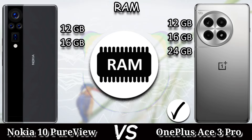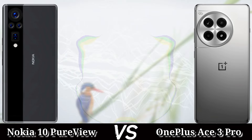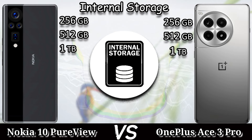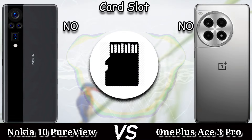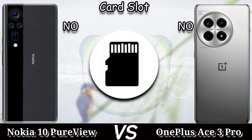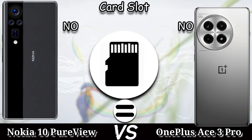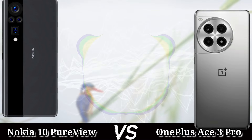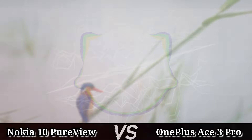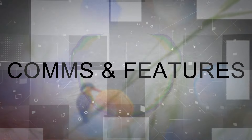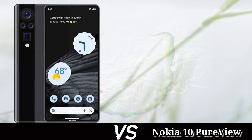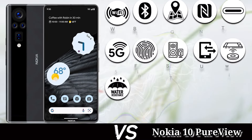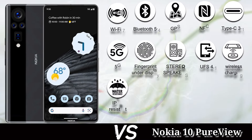For connectivity and features, the Nokia 10 PureView has Wi-Fi 7, Bluetooth 5.4, GPS, NFC, USB Type-C 3.1, 5G, under-display fingerprint, stereo speakers, UFS 4.1, wireless charging, SOS via satellite, IP68 resistance, and infrared. The OnePlus A3 Pro has Wi-Fi 7, Bluetooth 5.3, GPS, NFC, USB Type-C, 5G, under-display fingerprint, stereo speakers, UFS 4.0, reverse wired charging, and IP65.